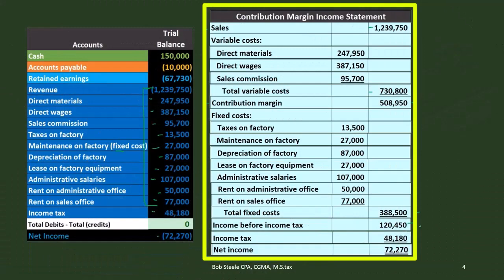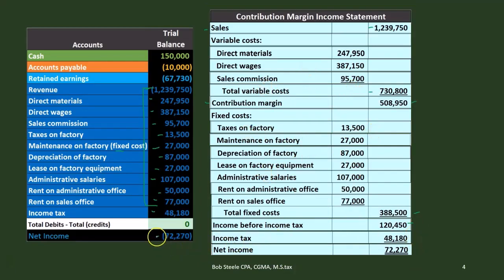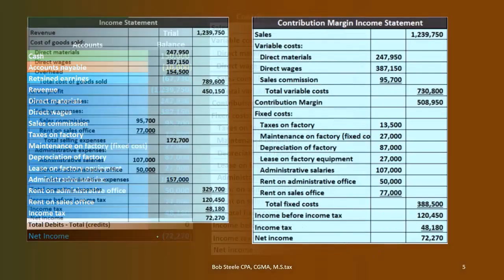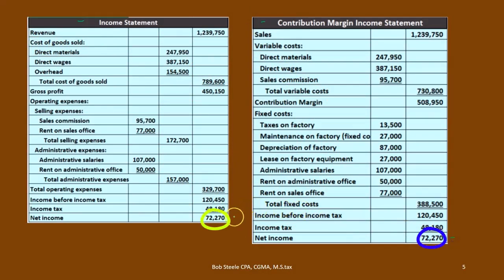Net income is $124,450 minus $48,180 income tax, giving us $72,270 — the same number as the financial income statement. So we have the same bottom line at the end of the day. The thing to note is that both statements produce the same net income of $72,270. The breakout is what's different.